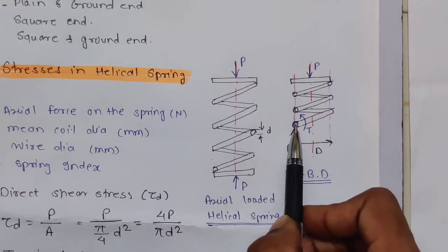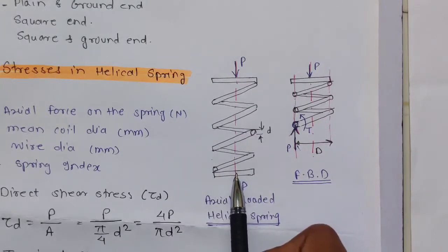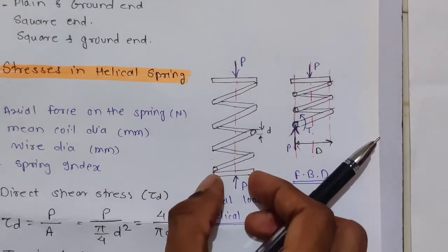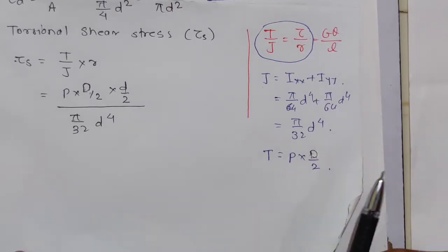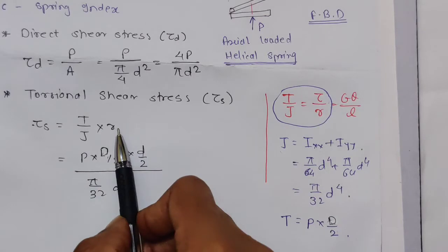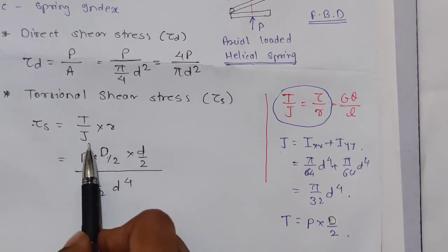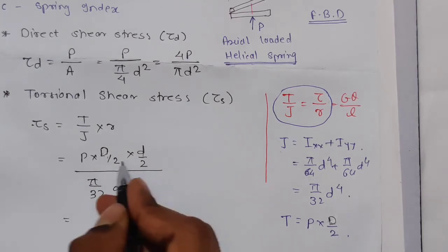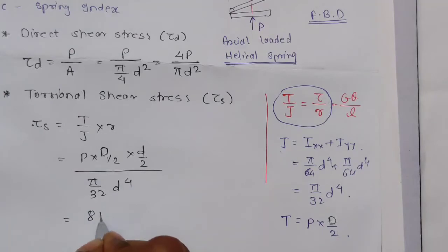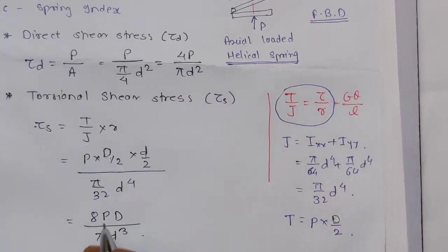The torque at this point is force times distance. The distance is D/2, so torque T = P·D/2. Using τ = T·r/J, we substitute T = P·D/2 and J = π/32·d⁴. Working through the arithmetic — the 4 becomes 8 — we get torsional shear stress τ_s = 8PD / (π·d³).